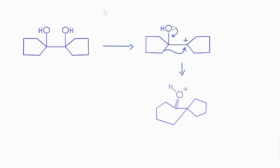Therefore, the five-membered ring expands to a six-membered ring. Finally, deprotonation completes the mechanism and the product is a bicyclic ketone.